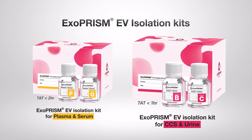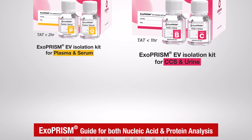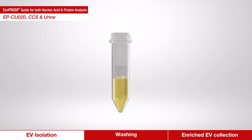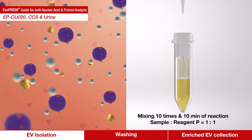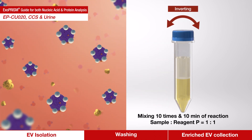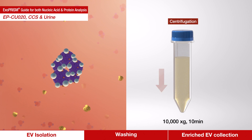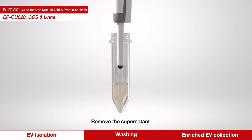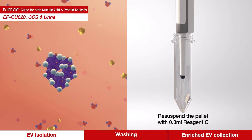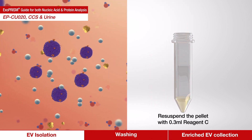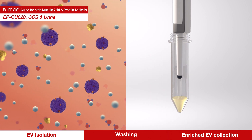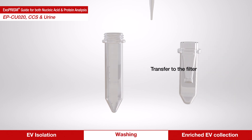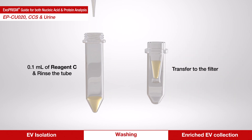Now, the Exoprism EV isolation kit for cell culture supernatants and urine is introduced. Reagent B is a water-soluble electrolyte mixture solution, and when mixed in a guided ratio with the sample, the ion strength surrounding extracellular vesicles changes to coagulate and precipitate by centrifugation. Remove the supernatant containing residual proteins and resuspend the extracellular vesicle pellet with reagent C. Then it is transferred to a washing filter and centrifuged to filter out things other than extracellular vesicles.